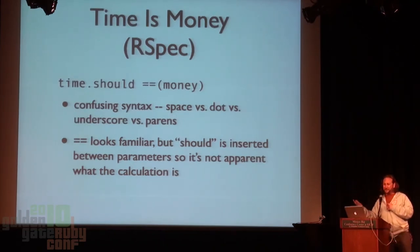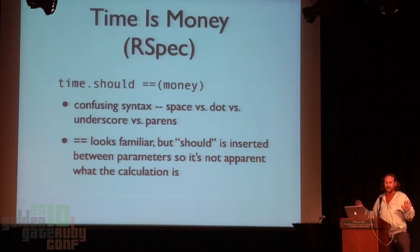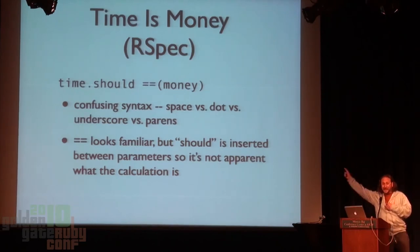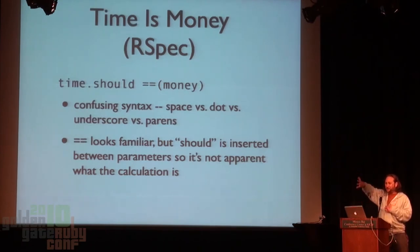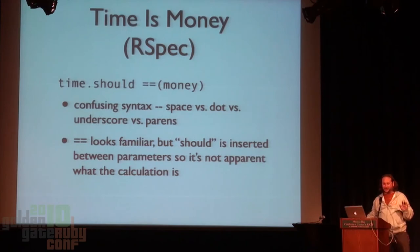In RSpec the syntax is very confusing — like, what is 'should'? It's a method, but it's a method on something weird, actually on an object, which is totally bizarre if you're trying to teach that to somebody. You never have any idea for like the first six months you're using RSpec where to put the spaces versus the dots versus the parens versus the underscores. Also, this double-equals thing is not actually the equals method — it's a weird made-up method on this proxy that 'should' returns. So this isn't actually code, it's some weird thing inserted on top of your code that kind of looks like code.